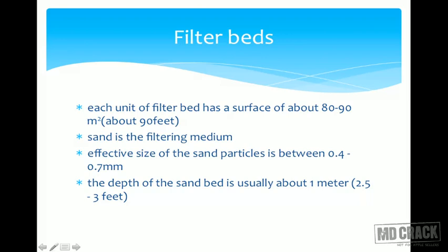Sand is the filtering medium here also. The effective size of the sand particles is between 0.4 to 0.7 mm. In the slow sand filter it was 0.2 to 0.3 mm, and here it is 0.4 to 0.7 mm. Therefore the diameter of the sand is larger and hence filtration is faster.